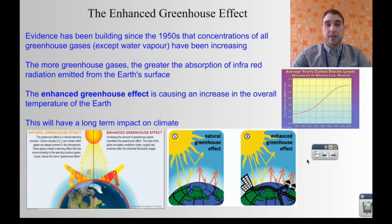So evidence has been building since about the 1950s that the concentration of all the greenhouse gases that we've talked about, except for water vapour, have been increasing. Water vapour, there's a certain level of water vapour you can get in the atmosphere before it falls out as rain. So it increases to a certain point and then it just falls out as rain. So we don't really worry about water vapour too much.